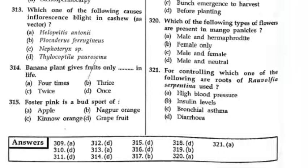Which one of the following causes Inflorescence Blight? Inflorescence Blight कैसा दिखता है वह next slide पर देखेंगे. जो Cashew में होता है — Cashew Anacardium occidentale है, Anacardiaceae family. So vector कौन सा है? Helopeltis species — याद रखेंगे, Helopeltis species. इसके बारे में detail में देखेंगे.